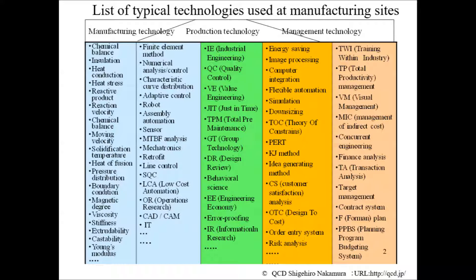Among them, manufacturing technology is the foundation of manufacturing. If a company opens it to other companies, other companies can produce similar products easily, so this company has to treat it as a company secret. Manufacturing technology is the knowledge property of the company and should not be stolen. For this reason, the company must implement patent protection and know-how protection to guard this.